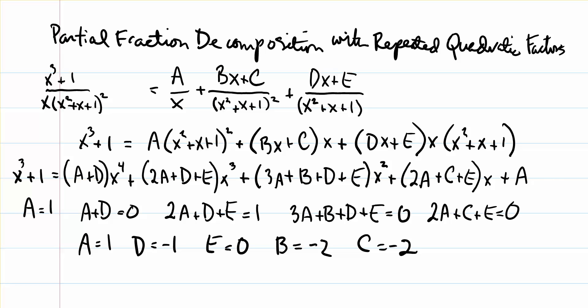You should come up with these values: A is 1, D is negative 1, E is 0, B is negative 2, and C is equal to negative 2. Once we have those, we can set up the split integral using these partial fractions.